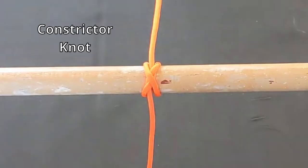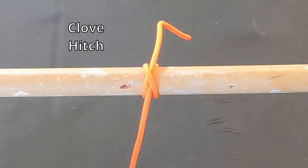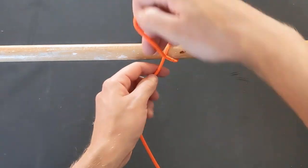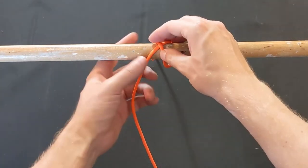The constrictor knot is often confused with a clove hitch, so what's the difference? Both knots begin by wrapping the line over the object and back underneath it, then over the object again, creating an X.